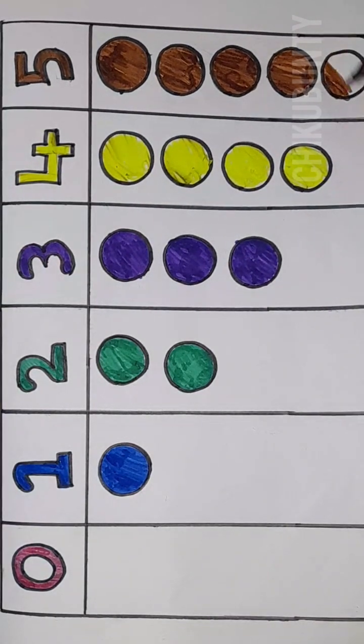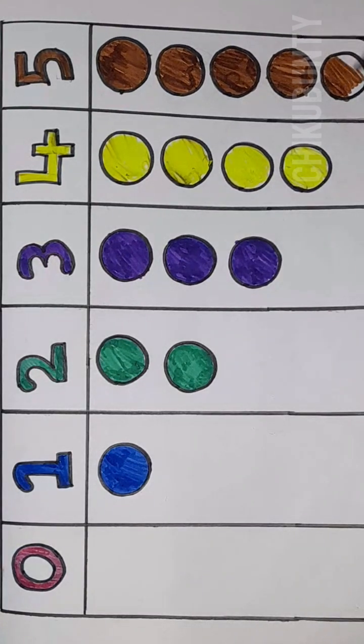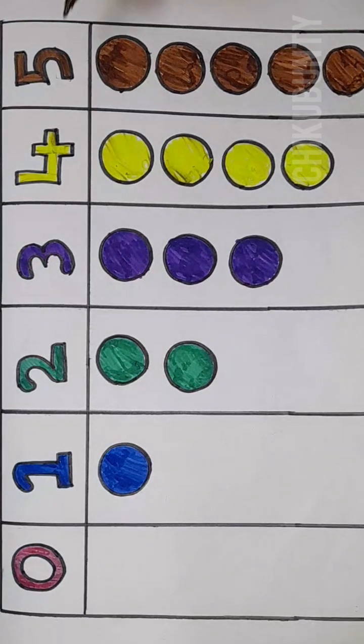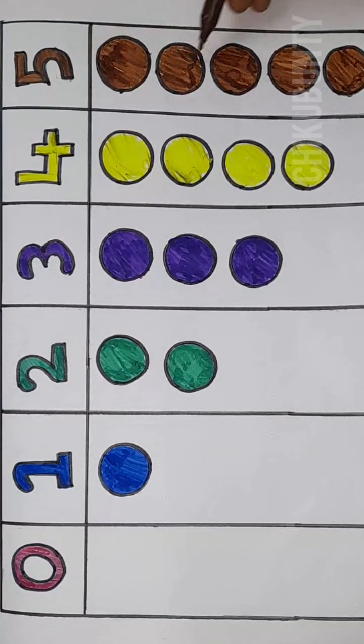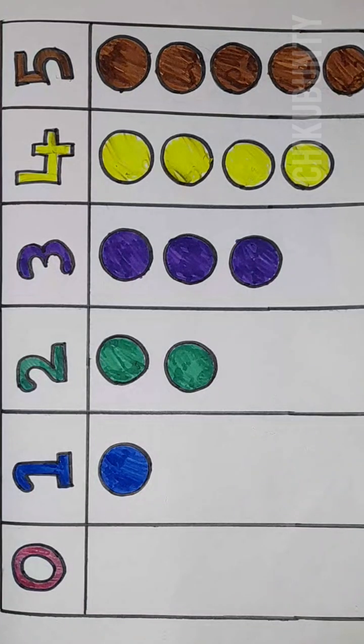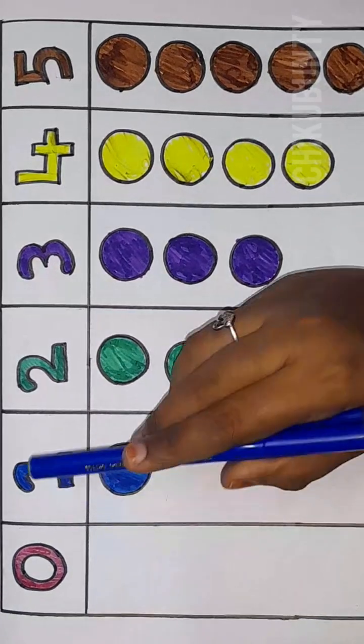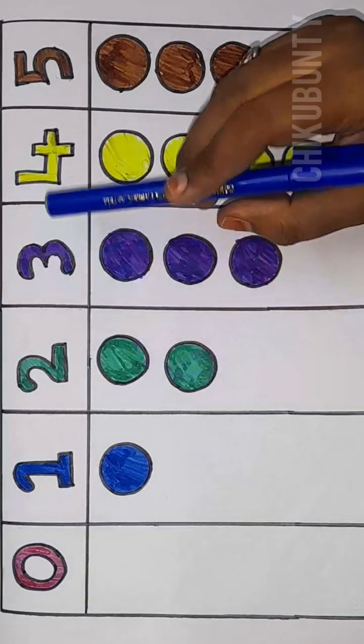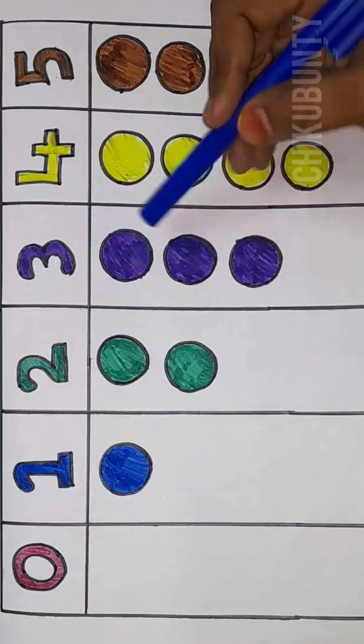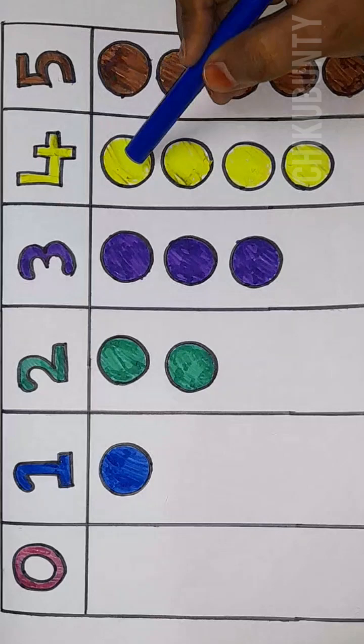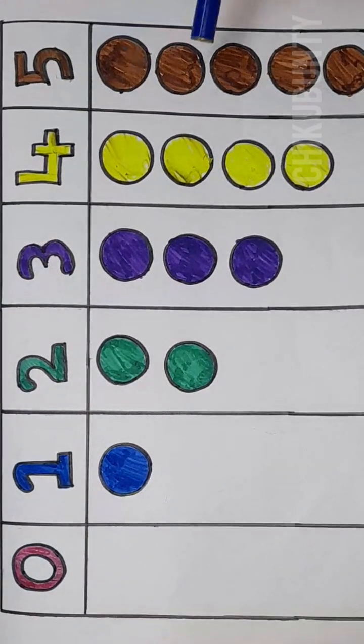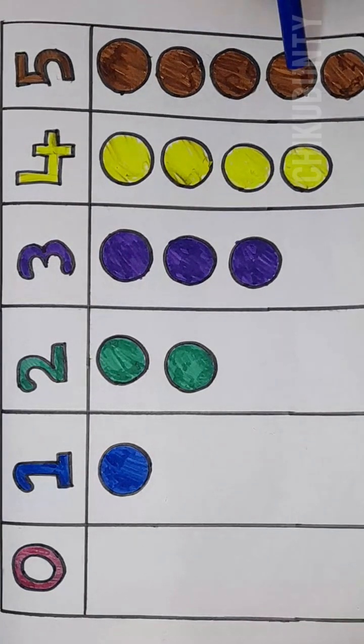Five, five brown color, five circle. One, two, three, four, five. Zero, zero circle. One, one circle. Two, one, two circles. Three, one, two, three circles. Four, one, two, three, four circles. Five, one, two, three, four, five circles.